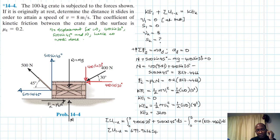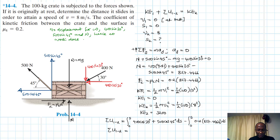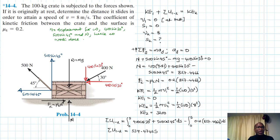Summing the terms together: the net work equals (400 cos 30 + 500 cos 45 − 0.2 × 827.4466) times s, which simplifies to 534.4742 × s.